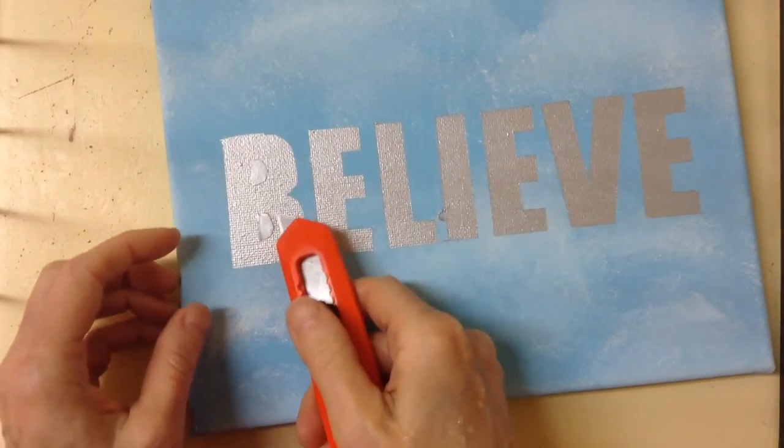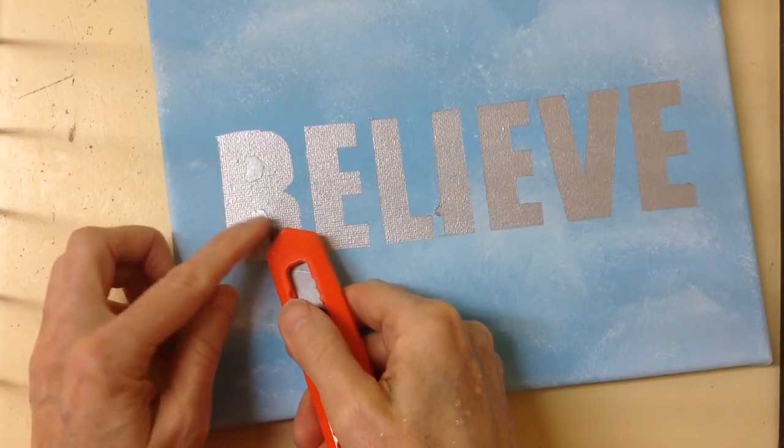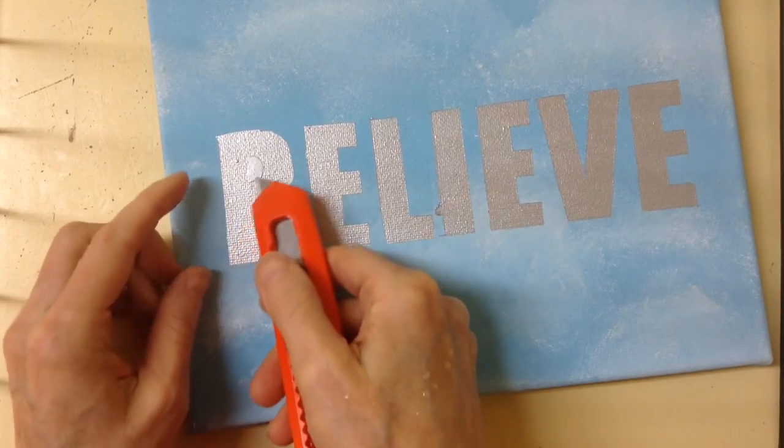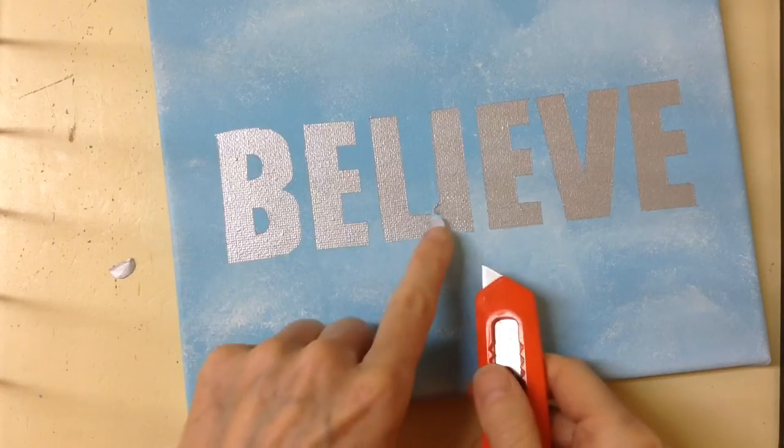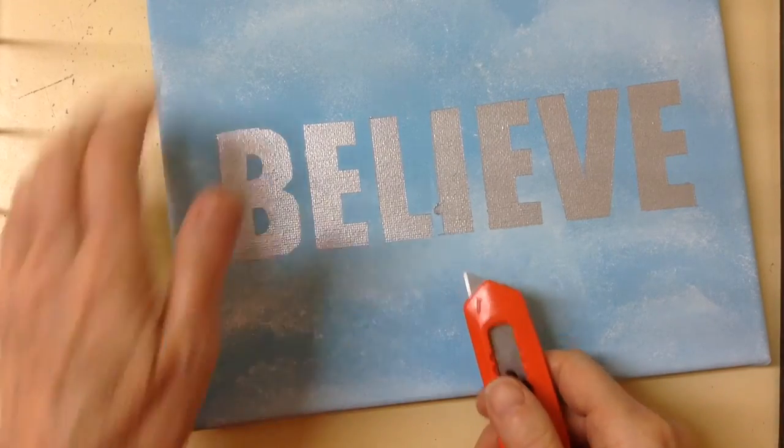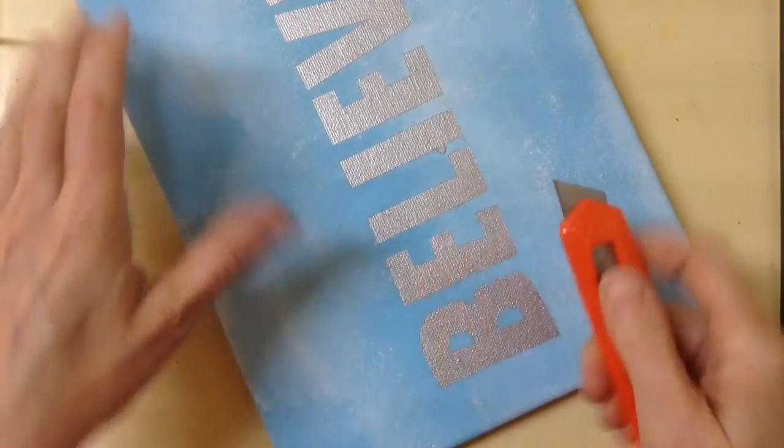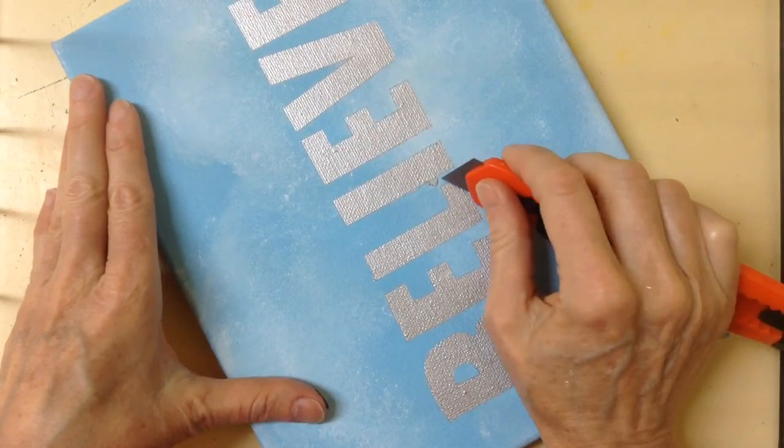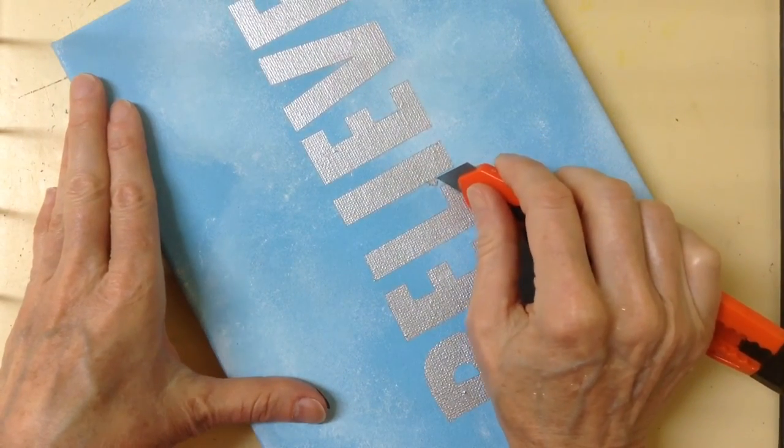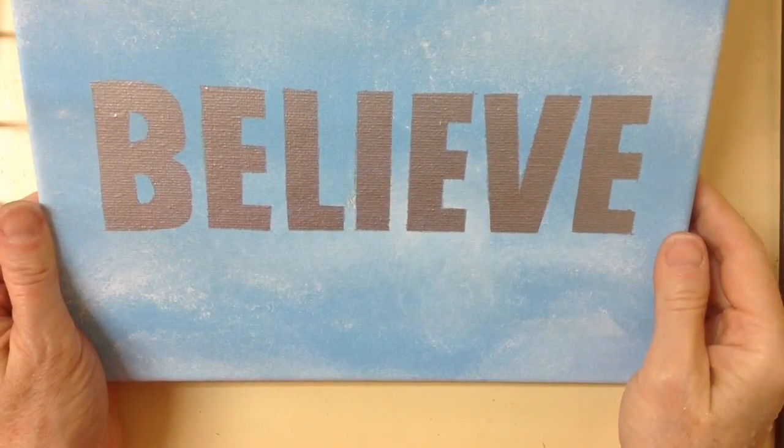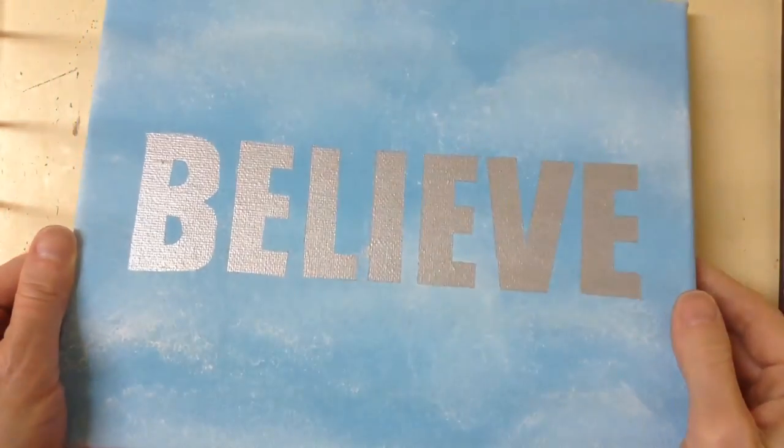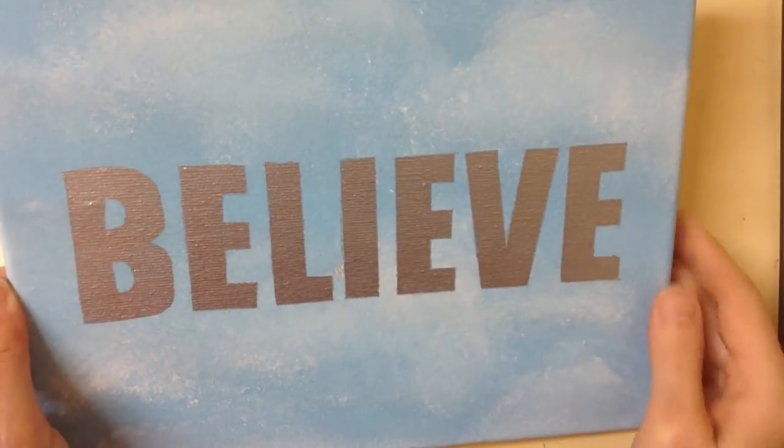You can use the X-Acto knife to take the little bits off like that. And I see there was a splotch where the paint went through there. That was probably because there was a bubble in the MacTac, but that's okay. You can just use your X-Acto knife and just scrape it off like that. So here you have your finished canvas that you can hang up on your wall.